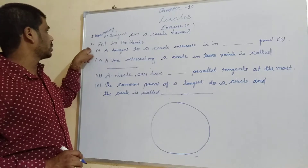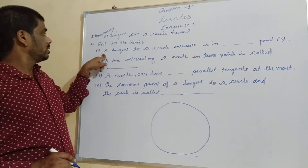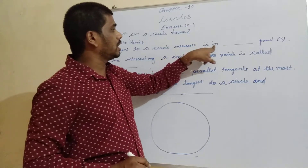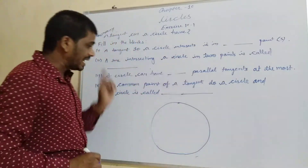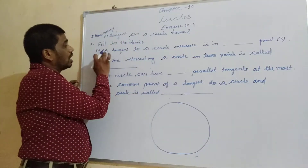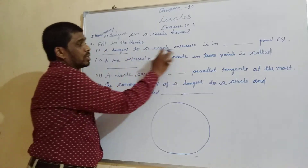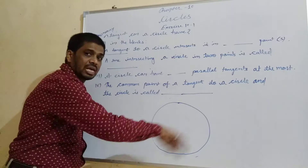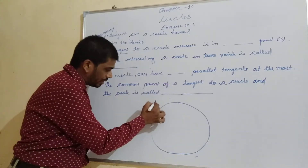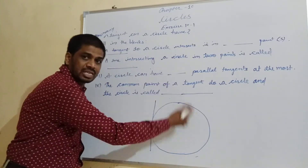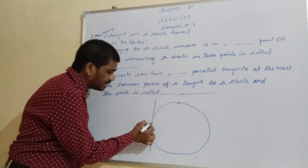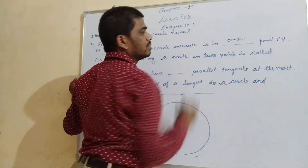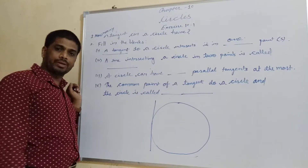Question number 2, fill in the blanks. First question: a tangent to a circle intersects it at how many points? A tangent will intersect the circle at only one point, so we will write one point, or unique point.